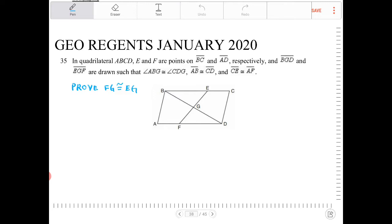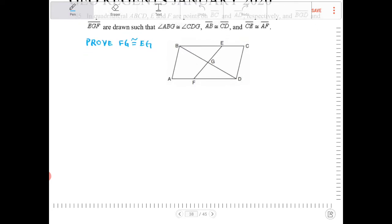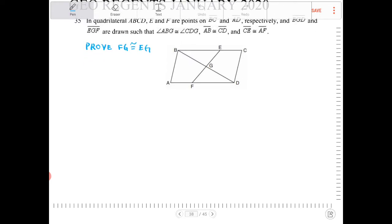Our goal here is to prove that FG is congruent to EG. Let's take a look at how we can do this. First, let's try and write down all the necessary givens into the statement column proof.